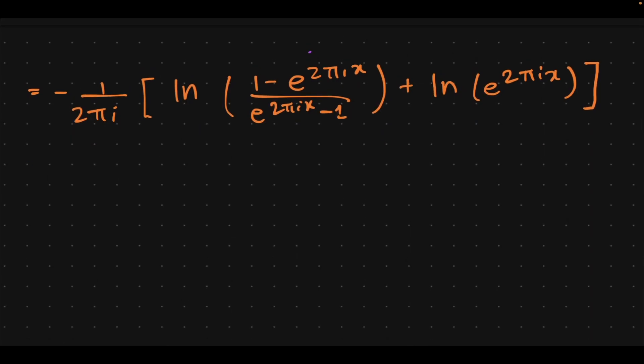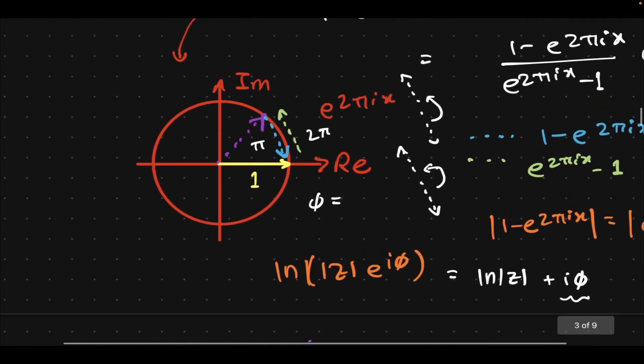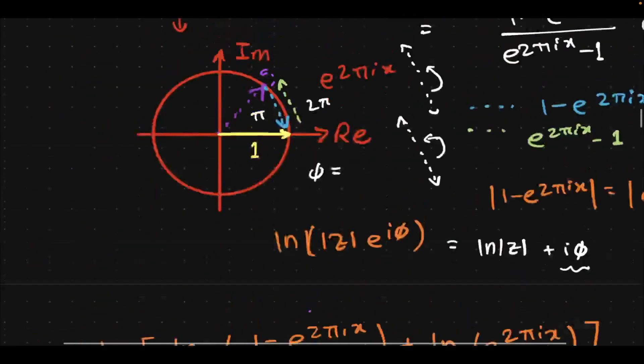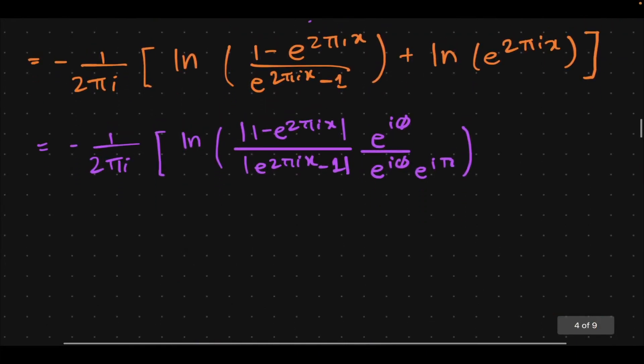In which case, you'll have π here and 2π there, but what's important is that one is in the numerator and one's in the denominator. So let me quickly rewrite this expression that we have here. What I was saying is minus 1 over 2πi, natural log of the magnitude of the numerator and the magnitude of the denominator.